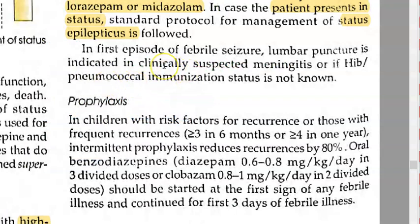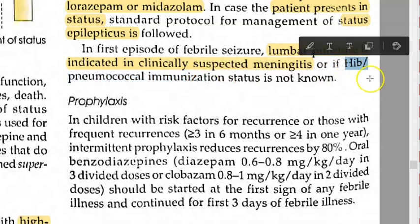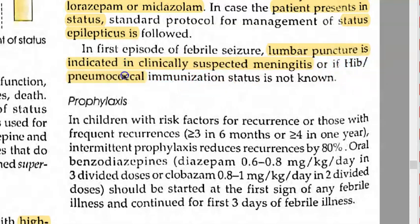Whenever you want to rule out intracranial infection, you should do a lumbar puncture and rule out meningitis. This is especially important if you don't know the immunization status for Haemophilus influenzae B and pneumococcus. Note: Haemophilus influenzae B is a bacterium that causes meningitis — it is not the influenza virus.